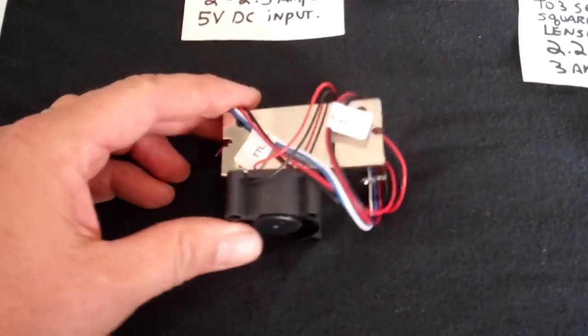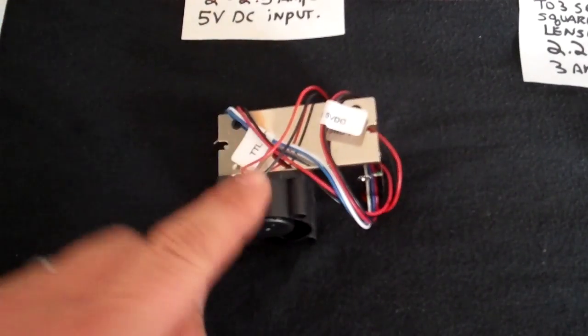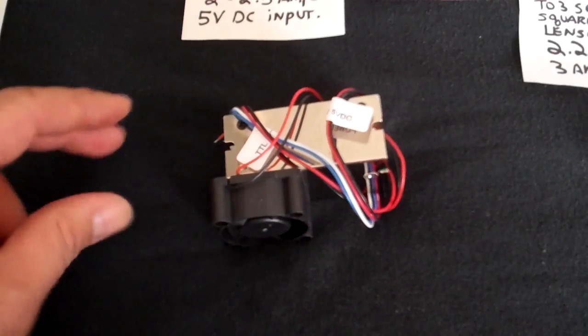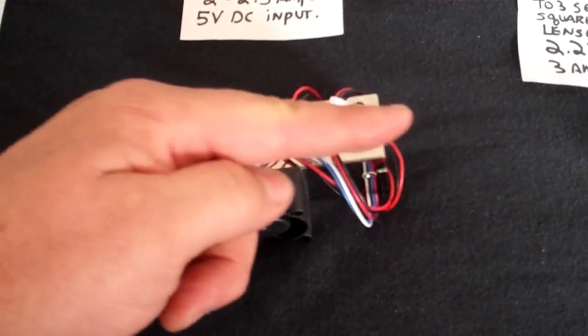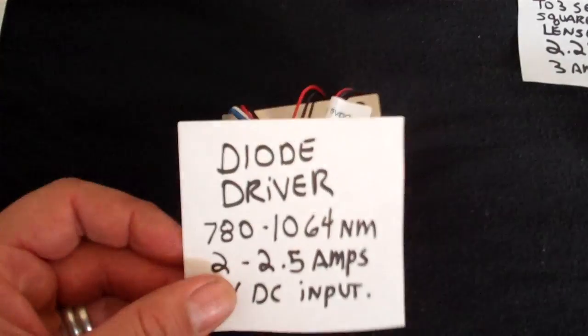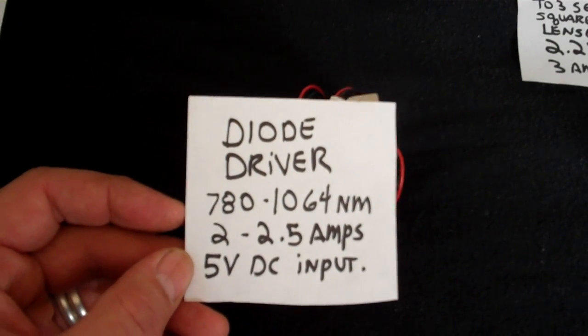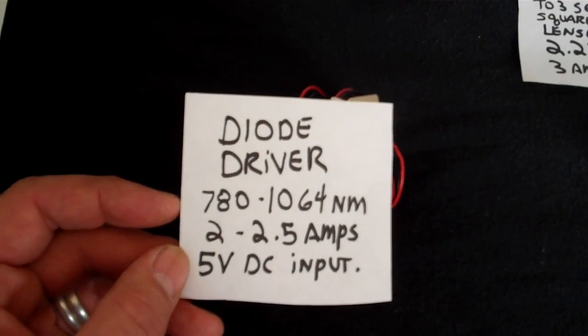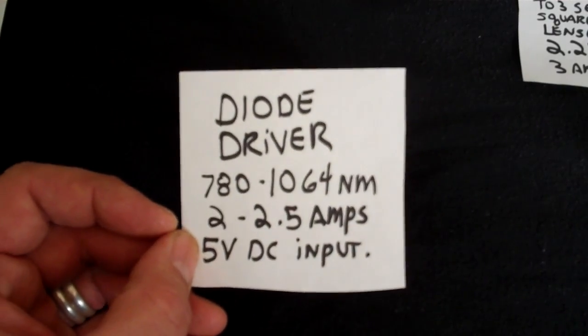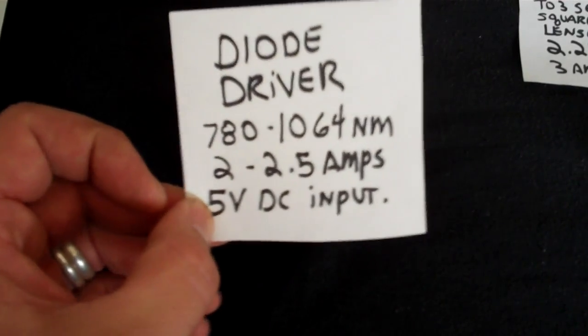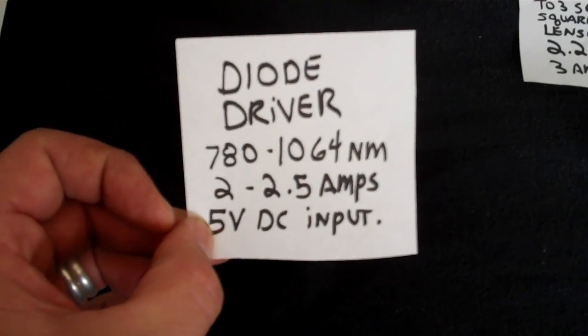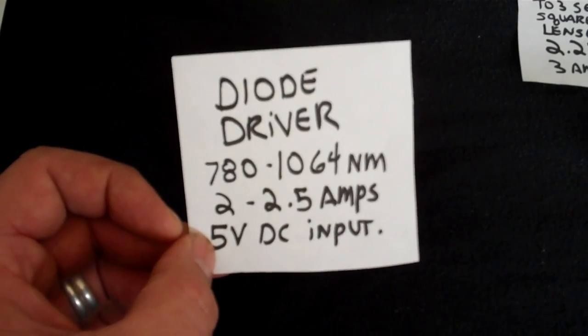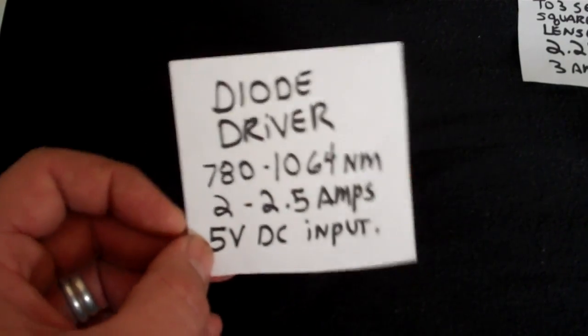Here is the actual driver unit for the diode. The fan comes with it. The fan needs to be moved over to this side and taped on so the air blows through it. This driver is a 780 to 1064 nanometer, 2 by 2.5 amps, 5 volt DC input. So don't get confused. 5 volts is not what goes to the diode.